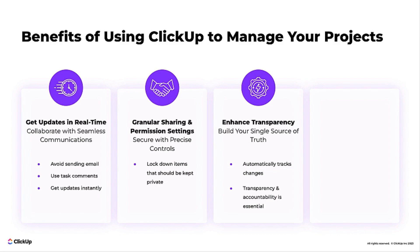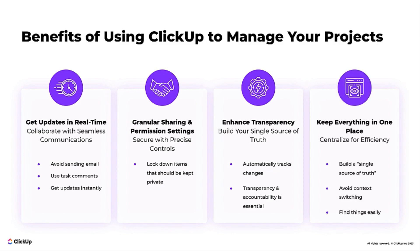Enhance transparency and build a single source of truth. ClickUp automatically tracks changes made to tasks and docs — this is how transparency and accountability are baked in to the platform. Centralize information and keep everything in one place. Having that single source of truth makes it easier to find information and avoid context switching and confusion over where information should be located. For example, you can build a team wiki to manage and share knowledge across the team.